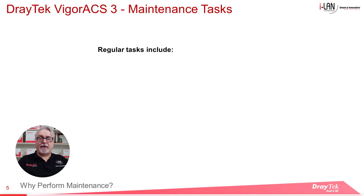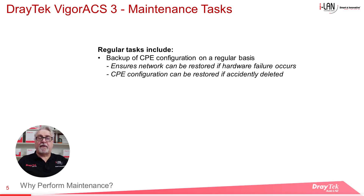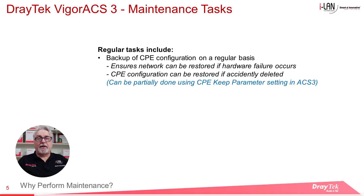Regular maintenance tasks include carrying out regular backups of each of the CPE devices. This ensures that if some event occurs, such as a hardware failure, you can restore the configuration on a replacement CPE device. If the configuration in a CPE device is accidentally deleted or changed, the backup config can be used to restore the original configuration. This can be partially done using the CPE Keep parameter setting we discussed in our previous webinar, which will restore a setting if it has been accidentally changed.